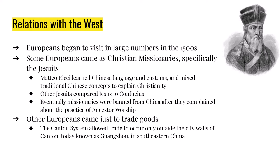Europeans — specifically the British East India Trading Company — would trade tea and silk for gold and silver. The reason Europeans had to give the Chinese gold and silver is because the Chinese refused to accept goods from Europe, believing their own materials were better than anything they could get from Europe.